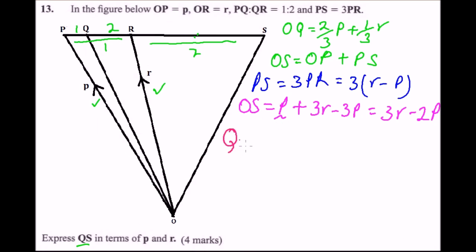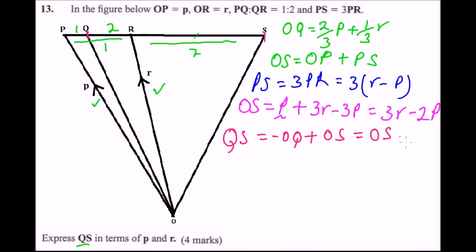Now we find vector QS. QS goes from Q to S, so QS equals minus OQ plus OS, which is the same as OS minus OQ. We have both vectors: OS equals 3r minus 2p, and OQ equals 2/3 p plus 1/3 r.